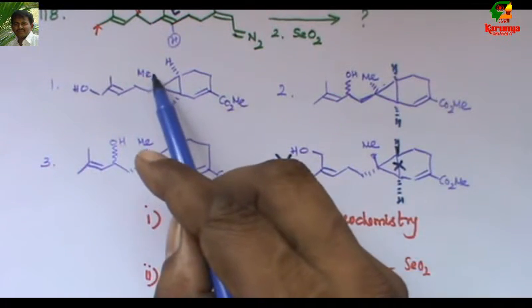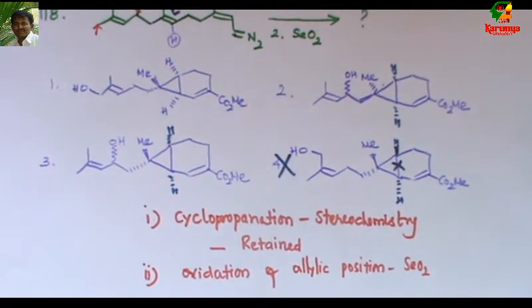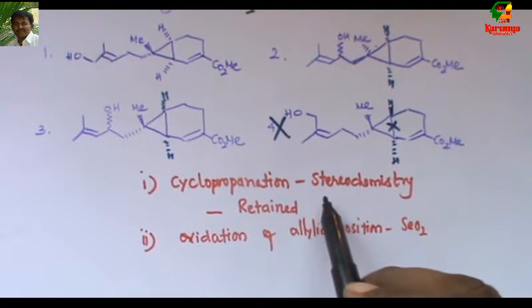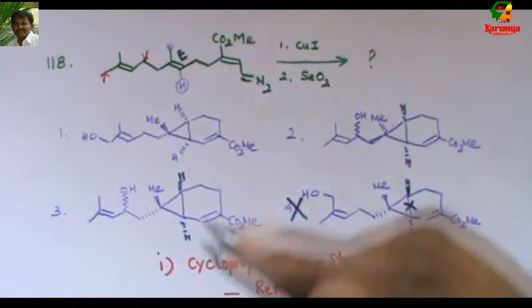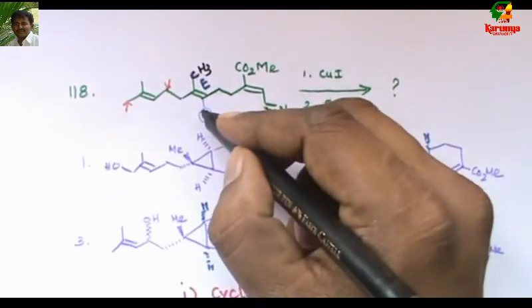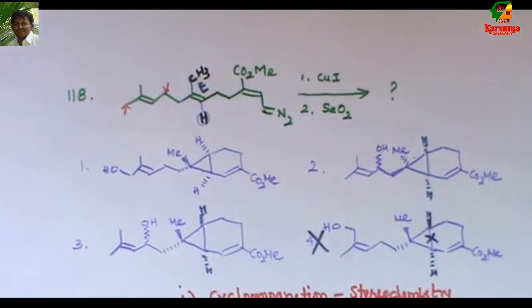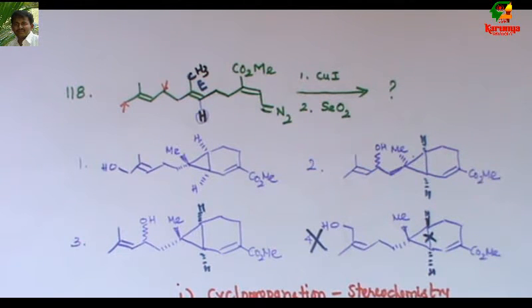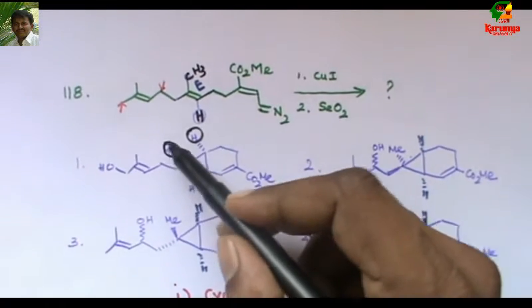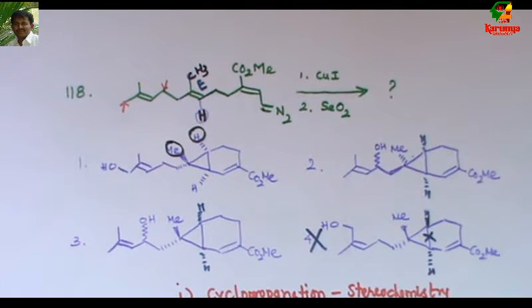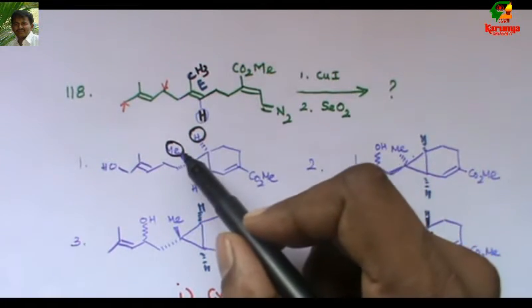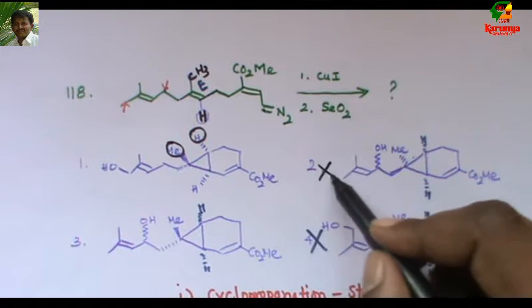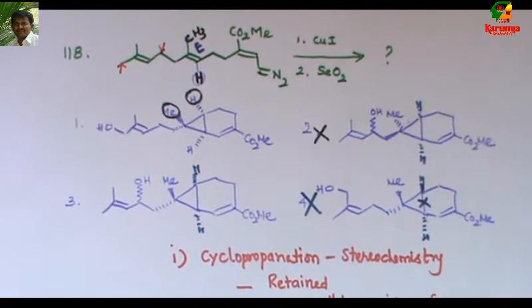What about the stereochemistry of this methyl and this chain? Already I have explained that during cyclopropanation, the stereochemistry is retained. If this CH3 and hydrogen are trans, the product also should be trans. It cannot be cis. So I compare these two hydrogens, this hydrogen and this methyl group. They should be trans in the given product. You can see here they are trans, here also they are trans. But in the second one they are cis, so this option is not possible. Now we have to go for only first and third option.